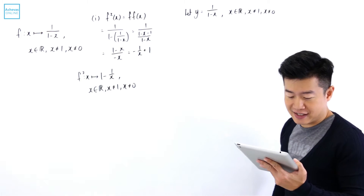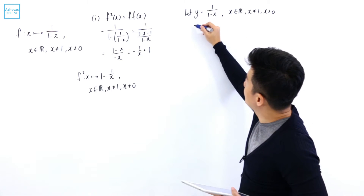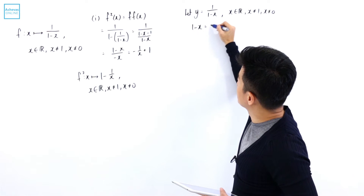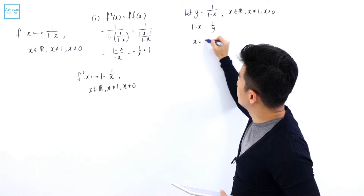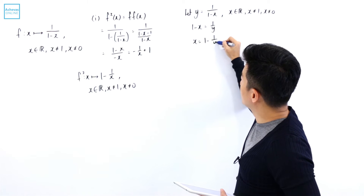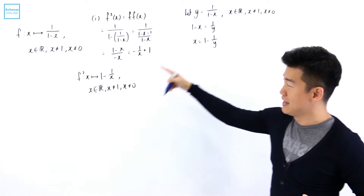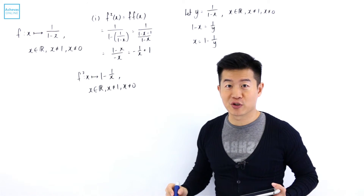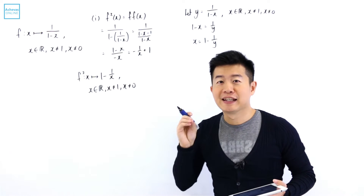Let's try to make x the subject. From what we have, that means 1 minus x is equal to 1 over y, so x is going to be equal to 1 minus 1 over y. If I replace y by x, I get exactly the same expression. So expression-wise, it is already almost settled.